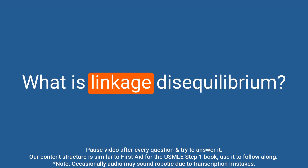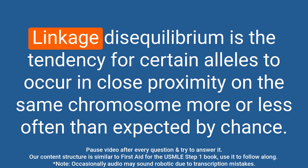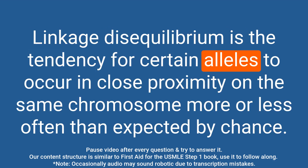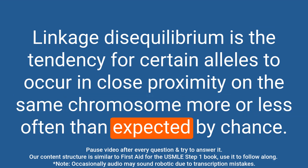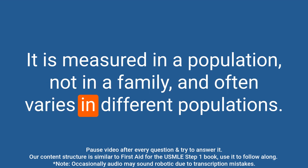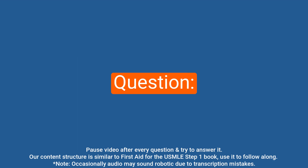Question: What is linkage disequilibrium? Answer: Linkage disequilibrium is the tendency for certain alleles to occur in close proximity on the same chromosome more or less often than expected by chance. It is measured in a population, not in a family, and often varies in different populations.